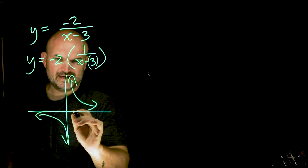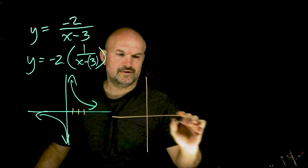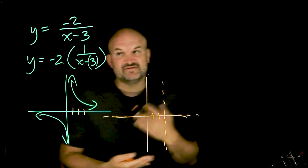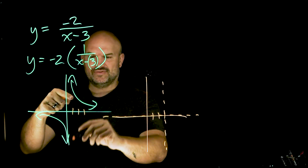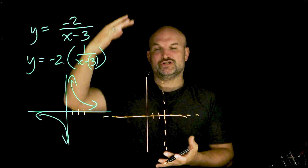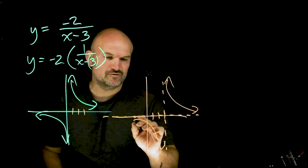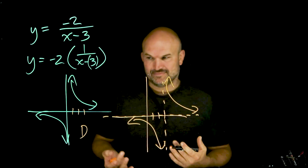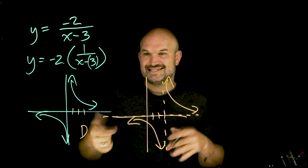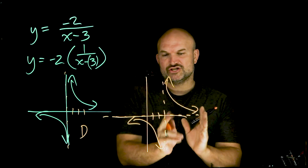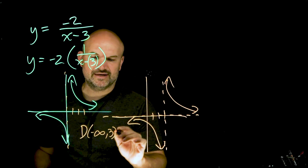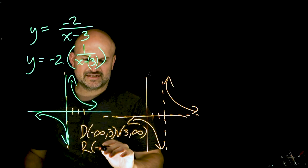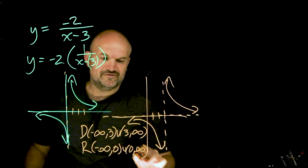To graph it, take the parent graph and shift the vertical asymptote three units to the right — one, two, three. The horizontal asymptote remains at zero since there's no vertical shift. Because of the reflection, the graph flips orientation. The domain is all real numbers except x = 3: (−∞, 3) ∪ (3, ∞). The range has not changed — the graph is defined for all values except zero: (−∞, 0) ∪ (0, ∞).